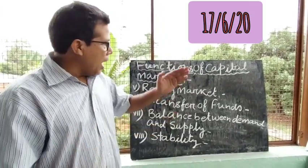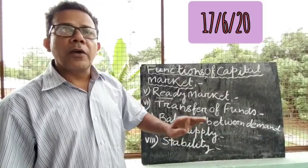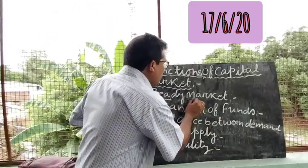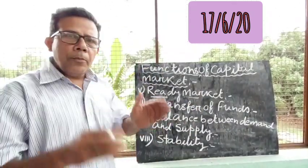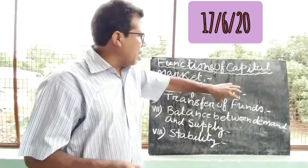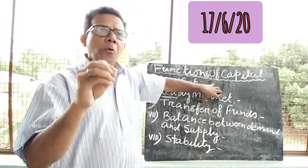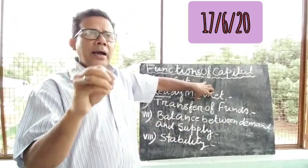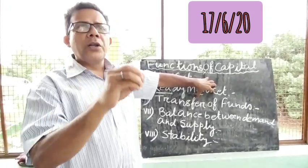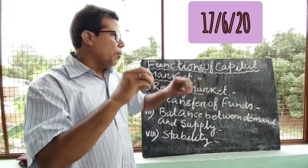So today I am going to discuss the remaining four functions of capital market. The first function is ready market. Now when I explain about the ready market, what do you mean by market? All of you know what is a market. Market is a place where basically buying and selling of some commodities are taking place.